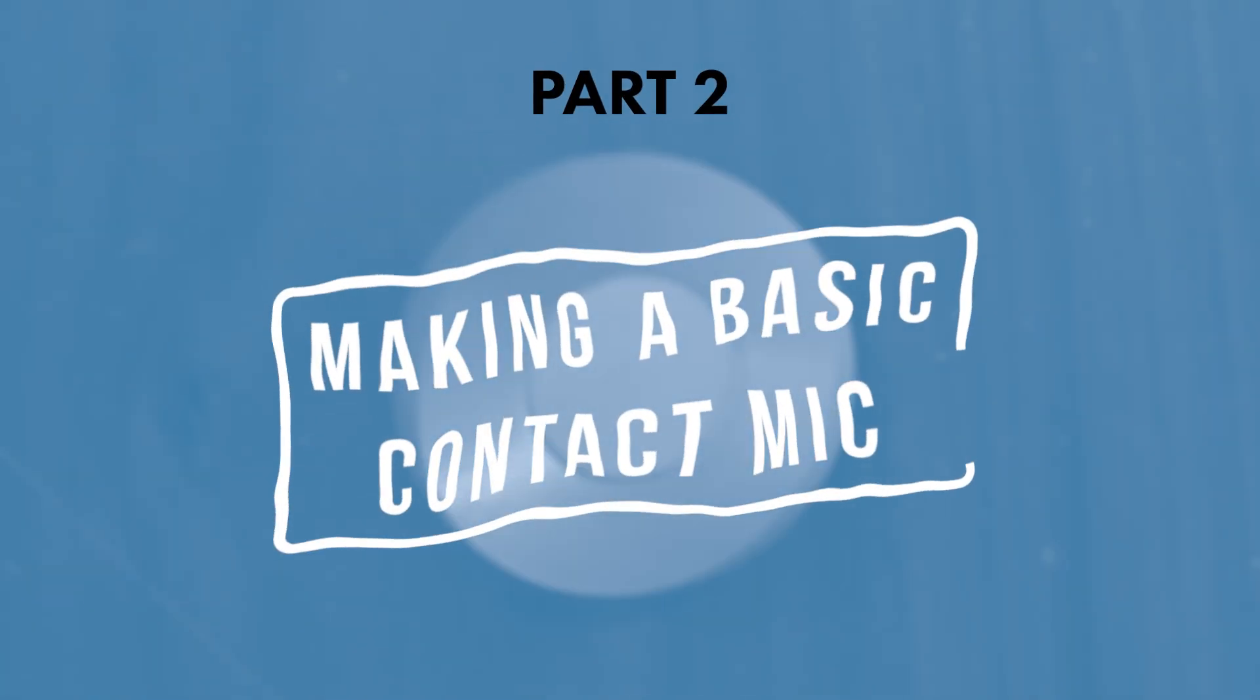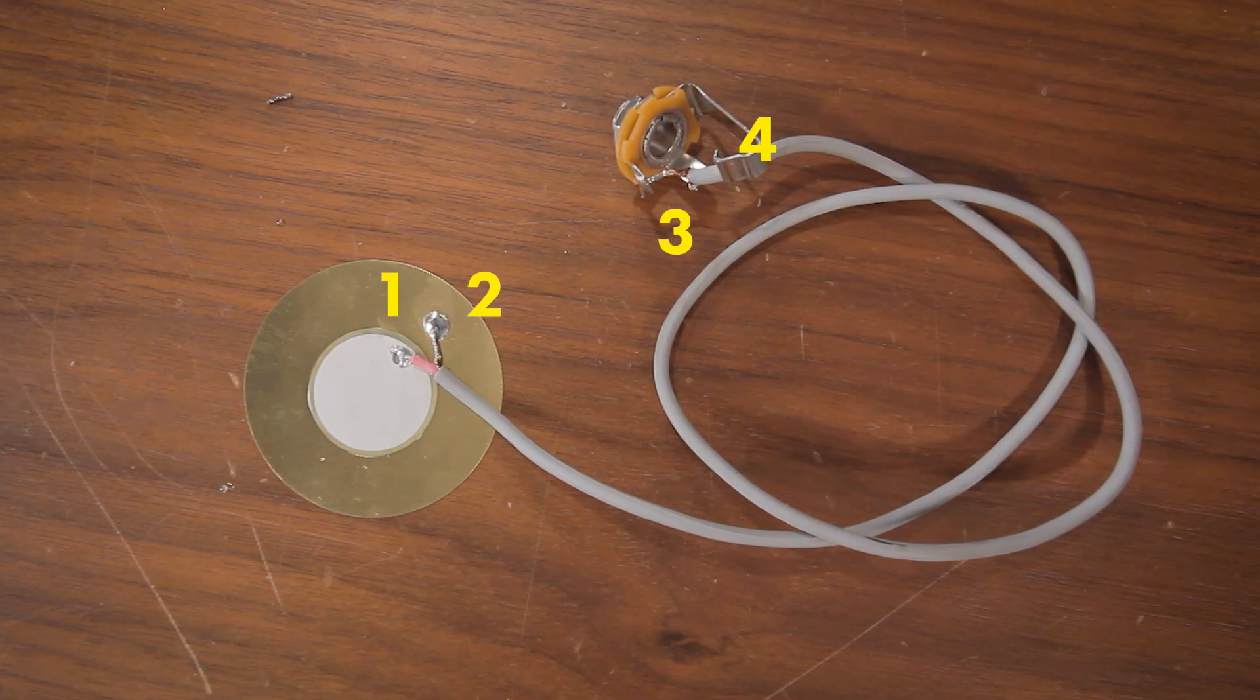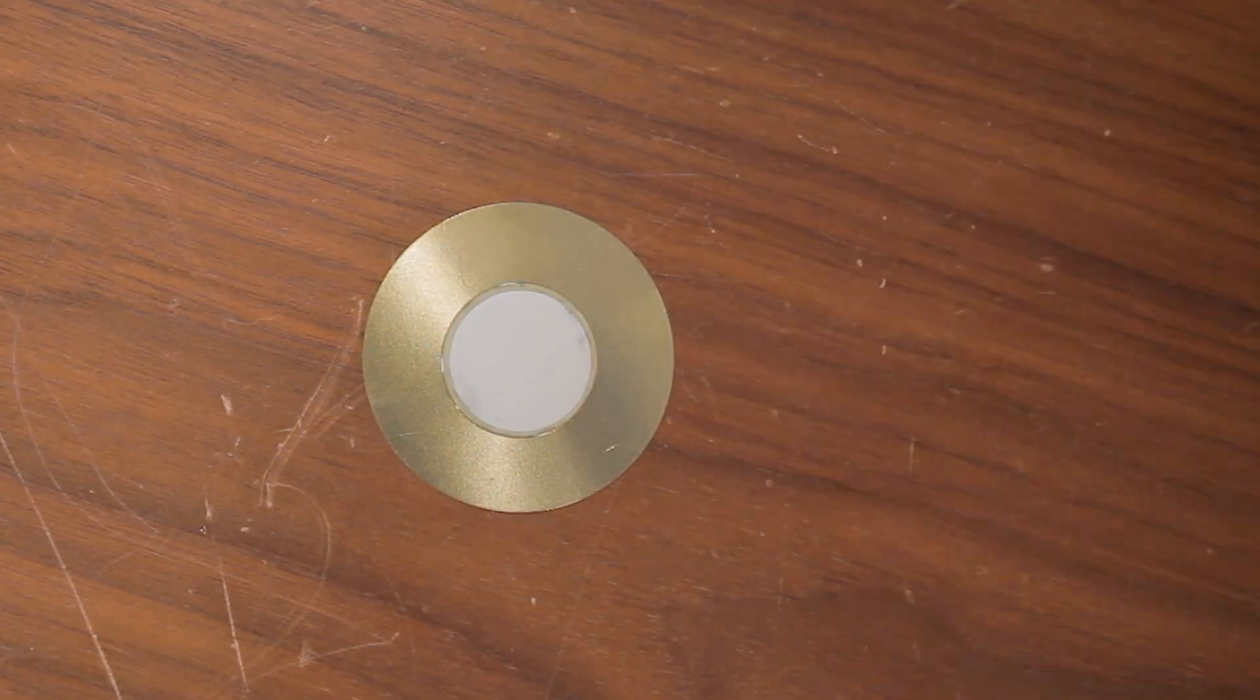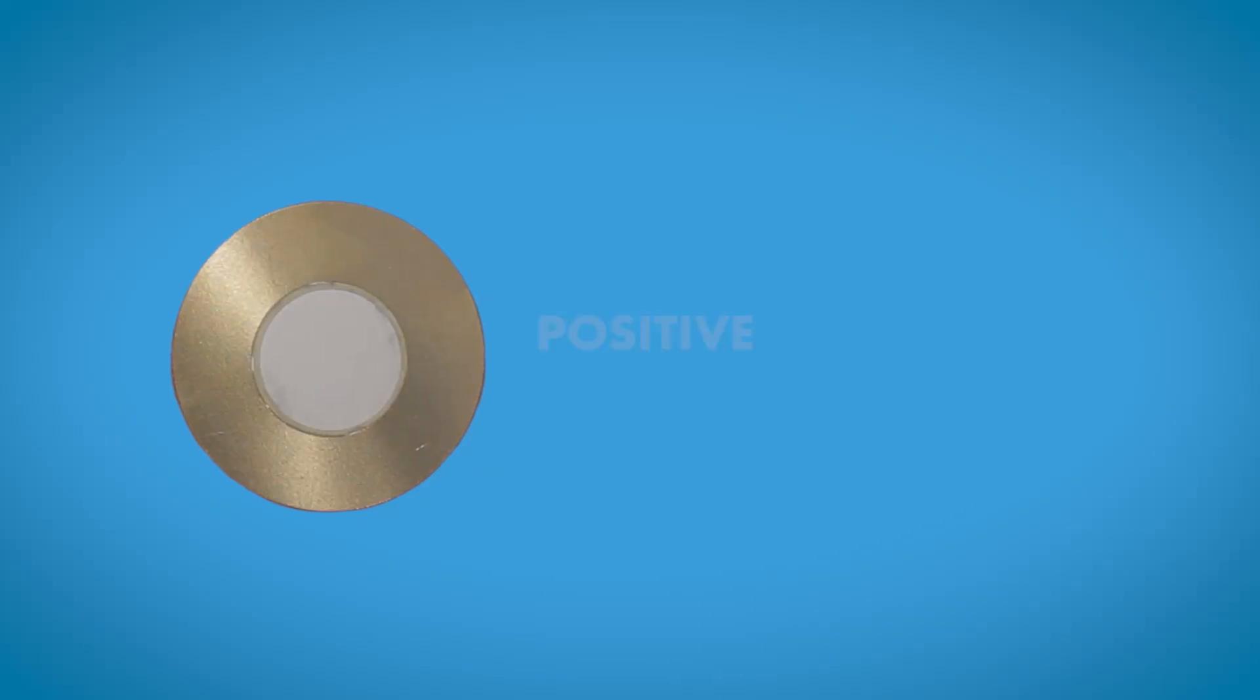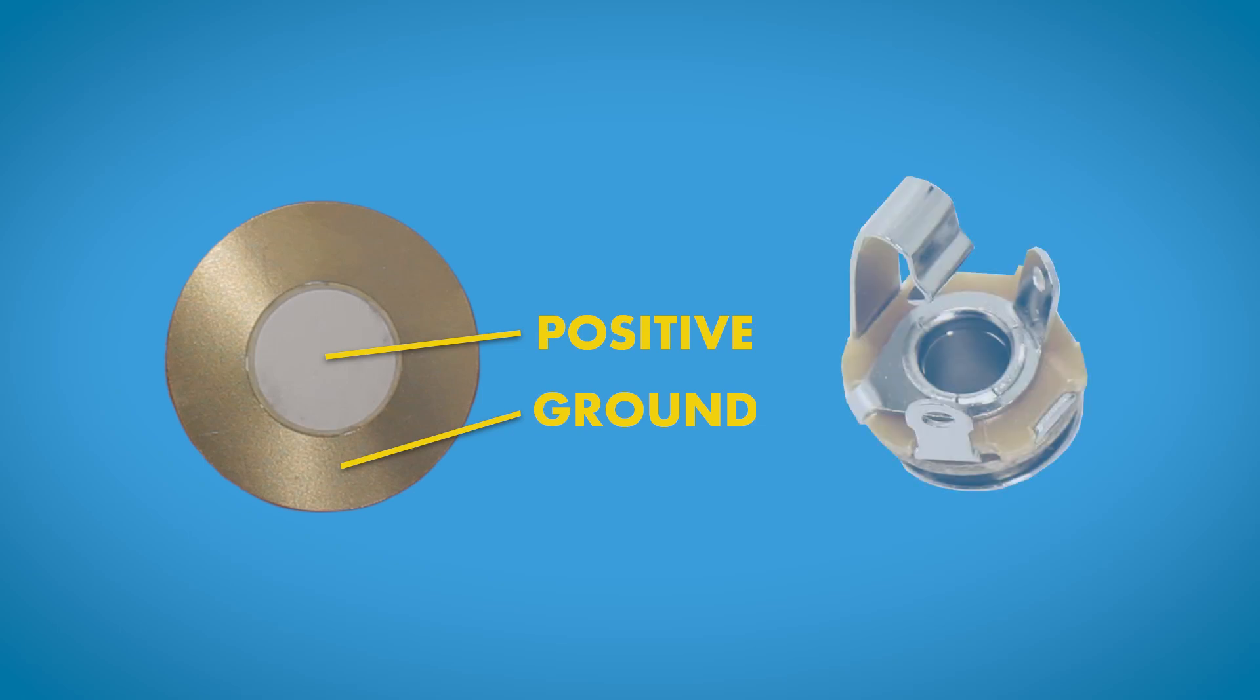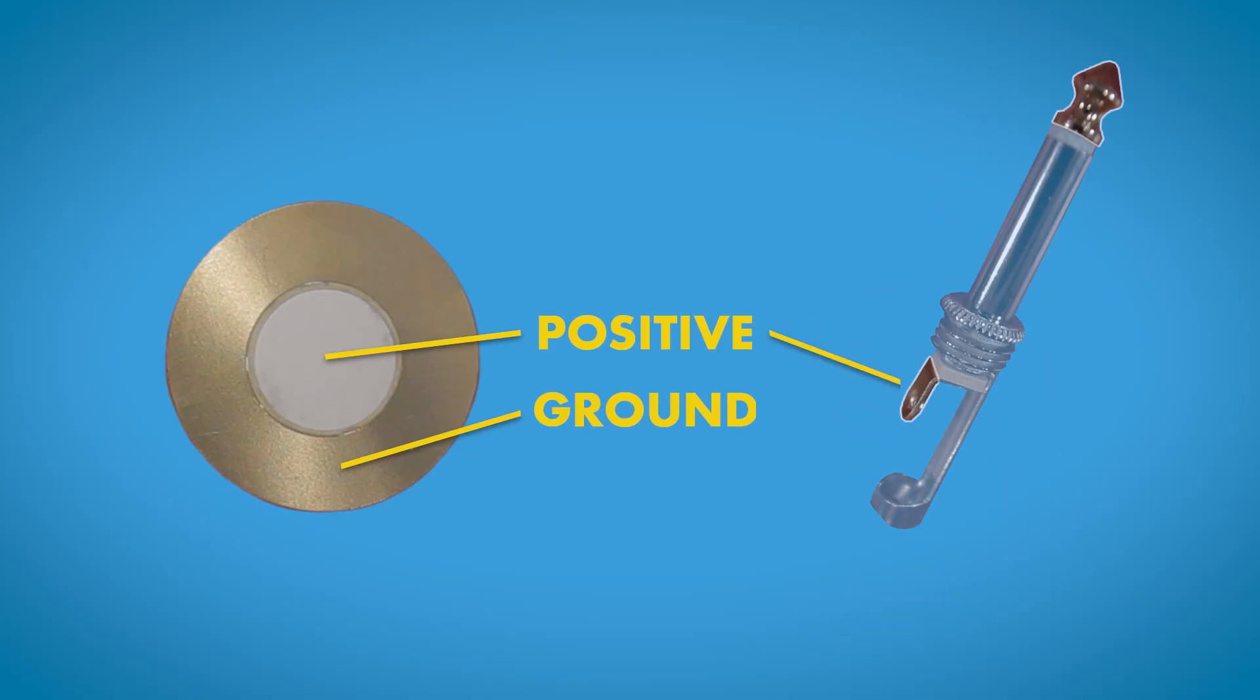All right, so let's make a basic contact microphone. Now if you're new to soldering, this is a perfect project to start with. Because it only requires four very simple solder points. So when we look at the back of a piezo disc, the center ceramic part is positive signal and the outside copper part is ground. Now if we look at the female instrument jack, the tip is going to be positive and the sleeve is going to be ground. Now these wiring principles also work if you want to use a male instrument jack. The tip is going to be positive and the sleeve is going to be ground. So what we need to do is connect the ground to ground and the positive to positive.